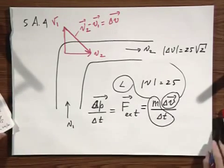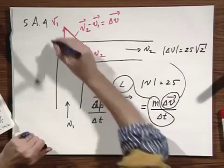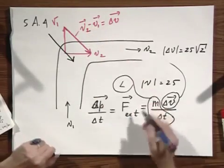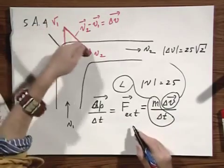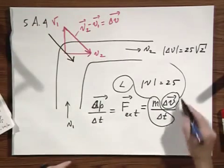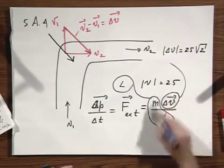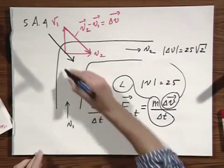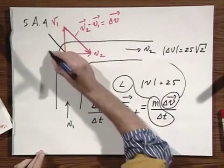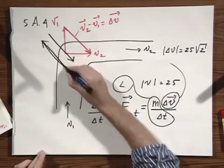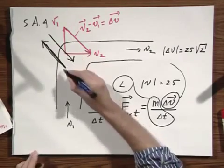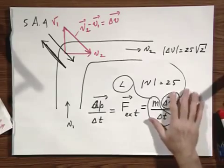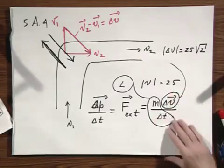This means the wall must push on the water in the direction of delta P. And since action equals minus reaction, the water will push back on the wall in exactly the opposite direction but with the same magnitude. You now have enough to calculate the force for this problem.